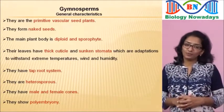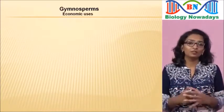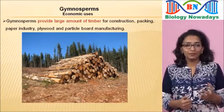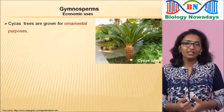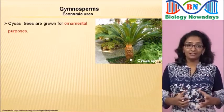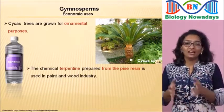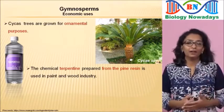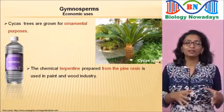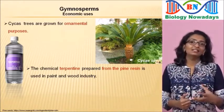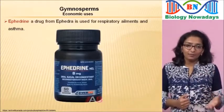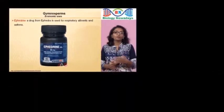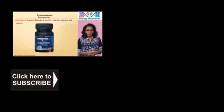Here are some economic uses of gymnosperms. Gymnosperms provide large amounts of timber for construction, packing, the paper industry, plywood and particle board manufacturing. Cycas, with its palm-like leaves, is grown for ornamental purposes. The chemical turpentine, used in the paint and wood industry, is prepared from pine resin — a gum-like substance produced by the pine tree. Pine seeds are roasted and eaten as snacks. Ephedrine, a drug from the conifer Ephedra, is used for respiratory ailments and asthma. Thank you for watching and stay tuned.